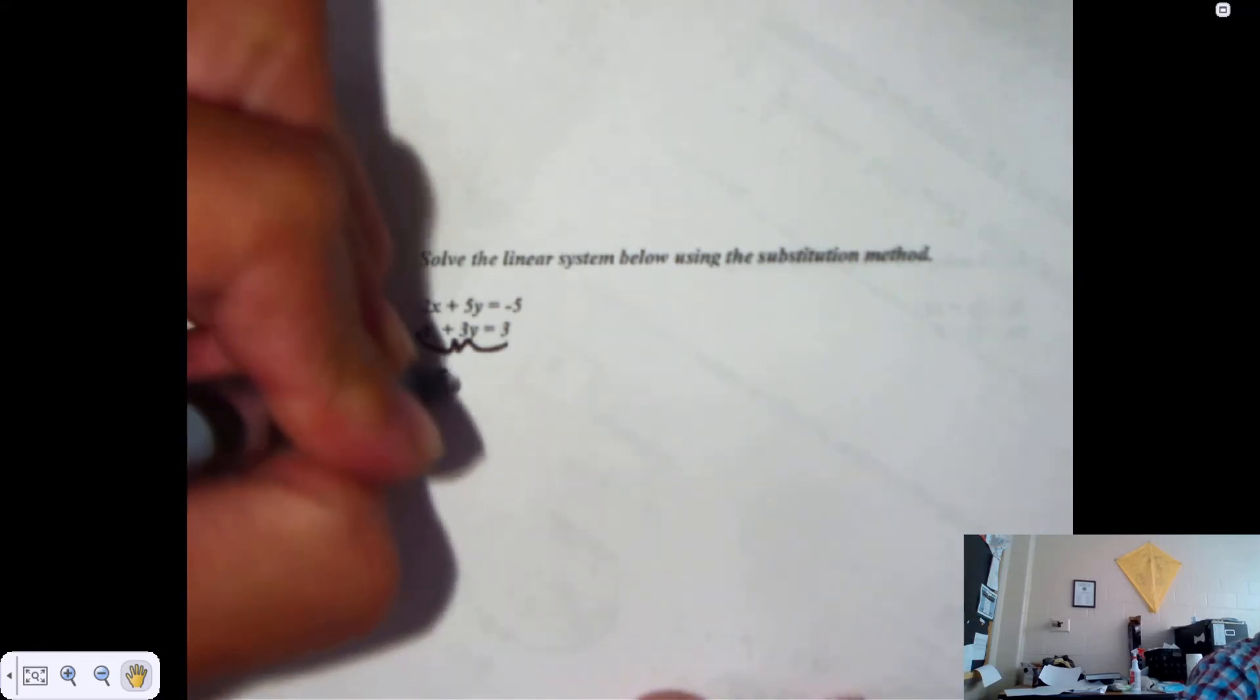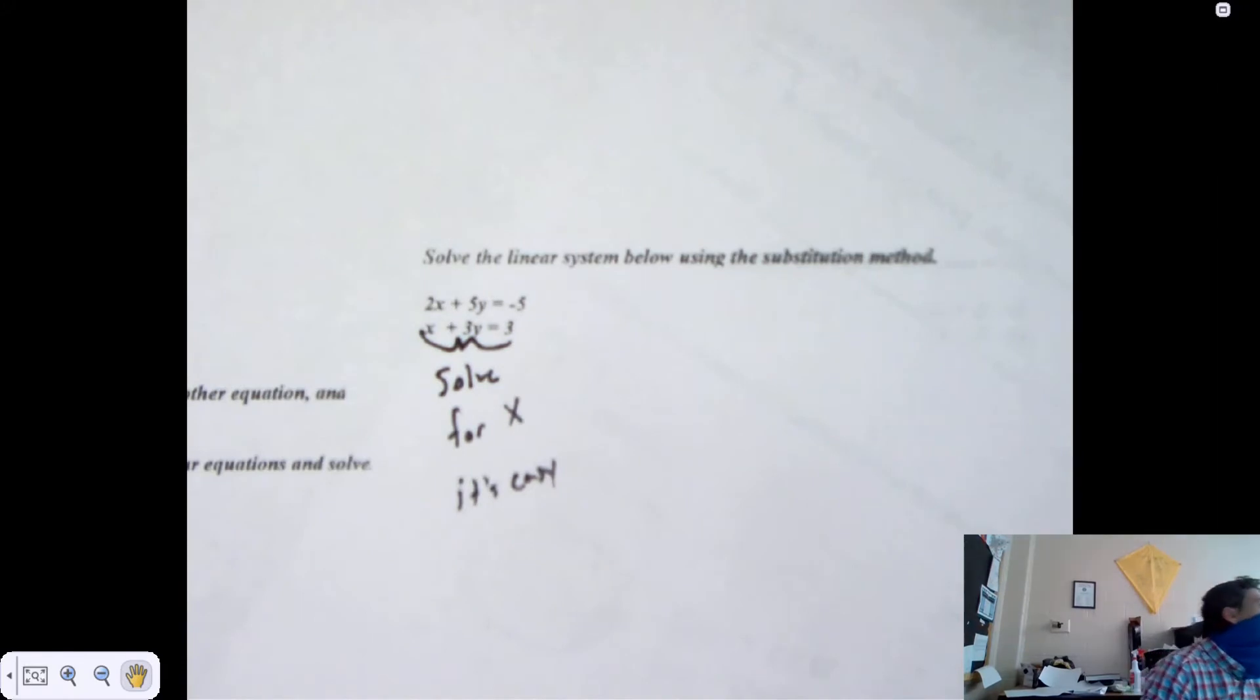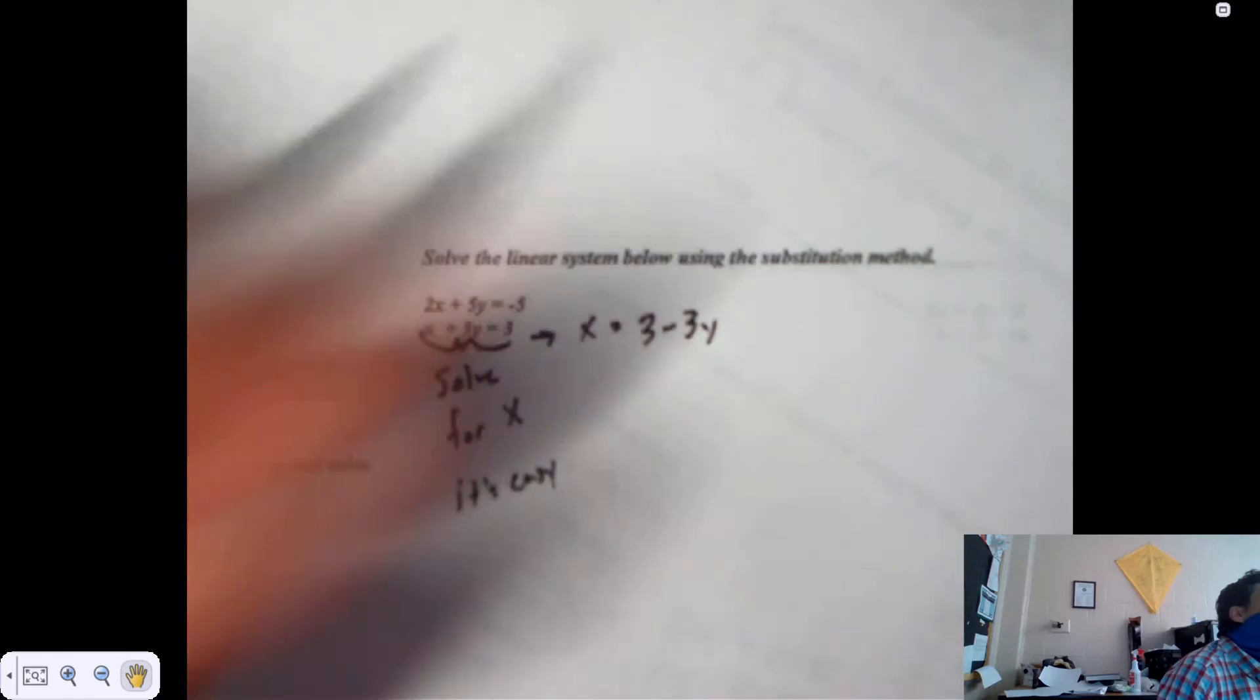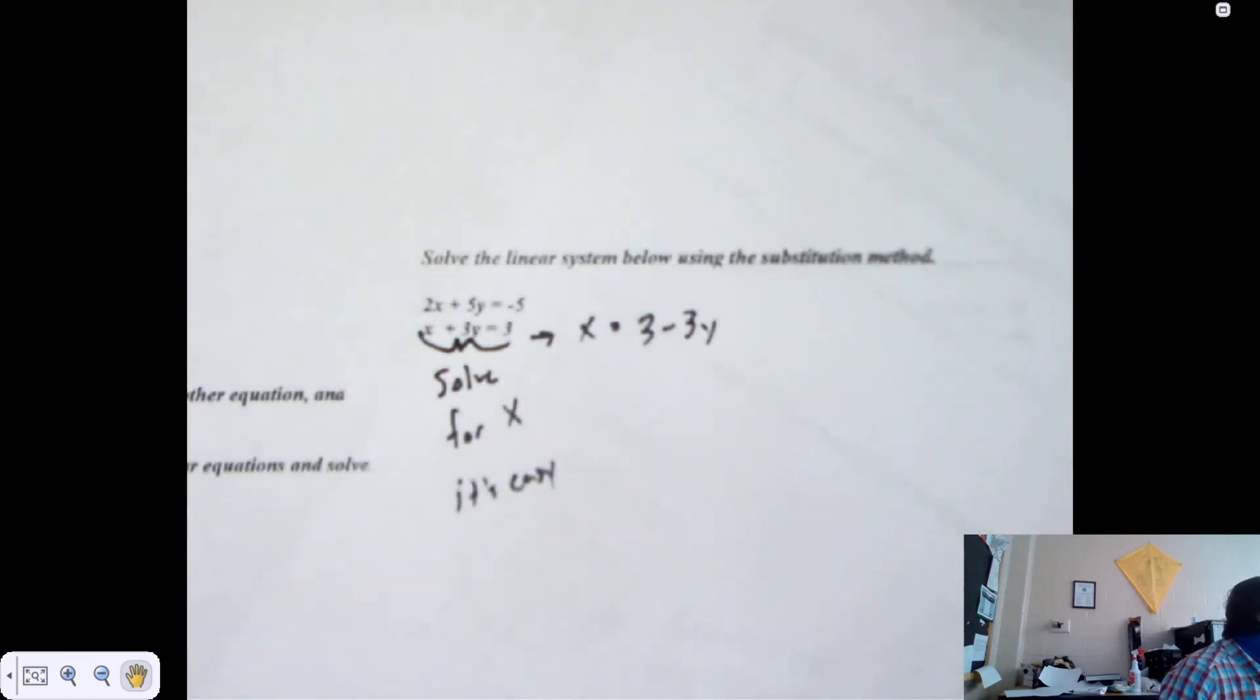Yeah, we're going to solve this thing for X because it's easy. That's why we do it, because it's easy. It's one step. What's the one step? Subtract 3Y. So X is 3 minus 3Y, or negative 3Y plus 3, nobody really cares. They really don't. Nobody cares about standard form on intermediate stuff. It usually makes it harder.